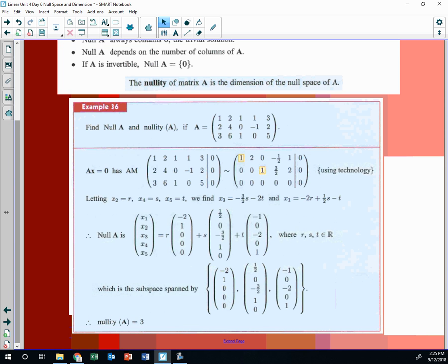The nullity is the dimension of the null vectors. The null vectors are just like what we did with the basis, except what you're finding is the solution set.